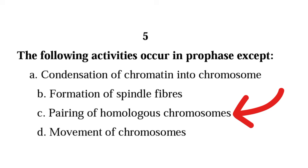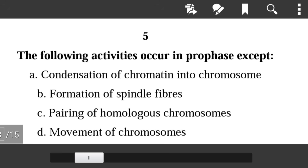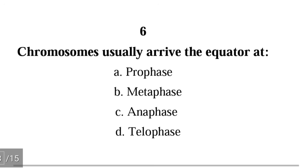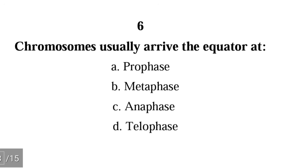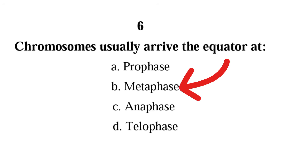Question 6: Chromosomes usually arrive at the equator during A) prophase, B) metaphase, C) anaphase, D) telophase. The correct answer is B) metaphase. During metaphase, chromosomes arrive at the center of the nucleus, known as the equator or metaphase plate.